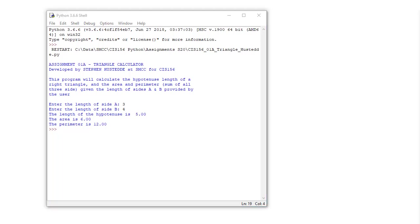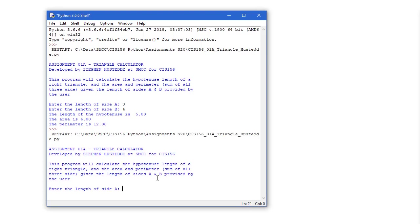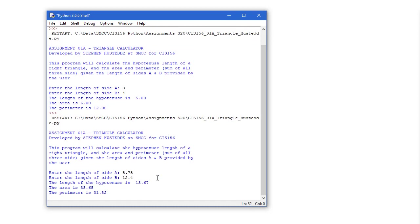Let's run it again. And this time I'll do 5.75. Length of side B might be 12.4. And the length of the hypotenuse then is 13.67. The area is 35.65. And the perimeter is 31.82. So you can use the numbers that I used here to test your project and make sure you're getting the correct results.